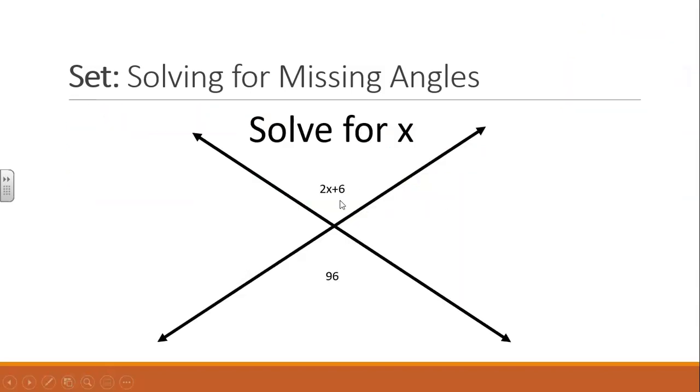In this example, we're going to solve for X. We have two vertical angles, one of them is 96 degrees, so that means the other one has to be 96 degrees because vertical angles are congruent. So we'll set up our equation, 2X plus 6 equals 96, and then we'll solve.